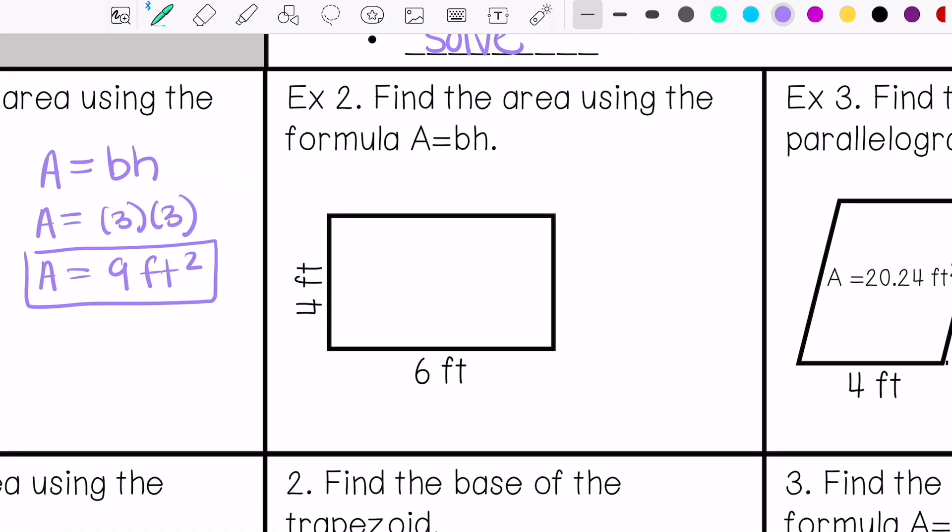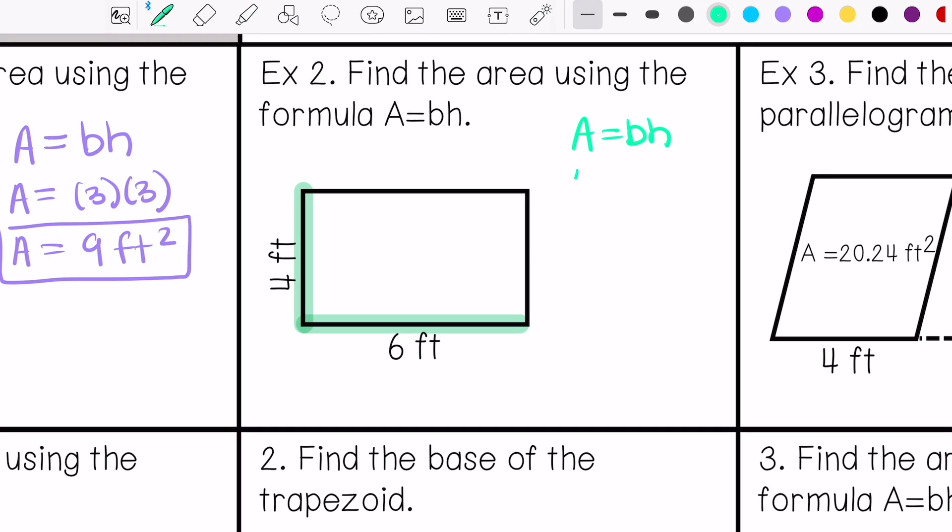Alright, number two. Find the area using the formula area equals base times height. This is the base. This is the height. So 6 times 4. It would be 24 feet squared.